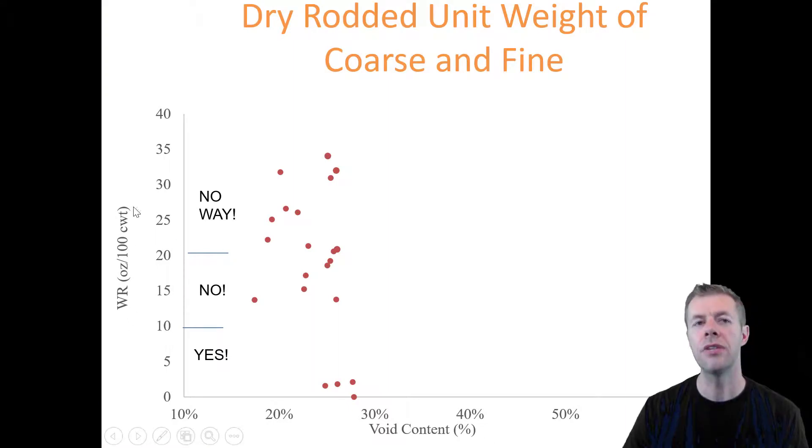On the y-axis is the amount of water reducer it took to get satisfactory performance in the box test. We have some that have very high water reducer. That falls into the no way category. That means the water demand is super high. That's not good. Then we have some in the no category. Some that we would not like to be within. We'd love to be in this yes category. All of these mixtures are the same. They have the same amount of water, same amount of cement, same amount of paste, same volume of aggregates.